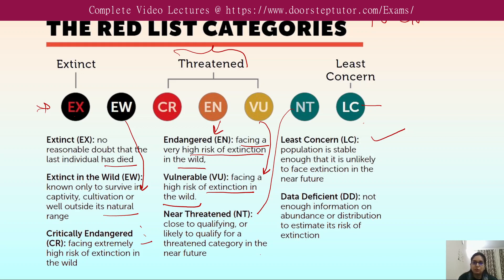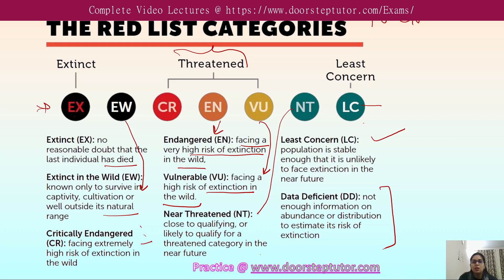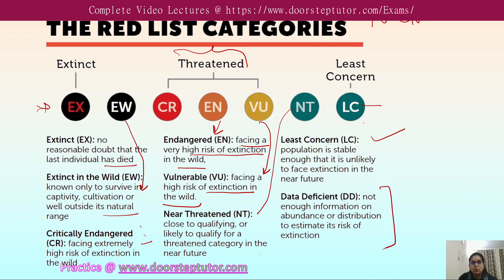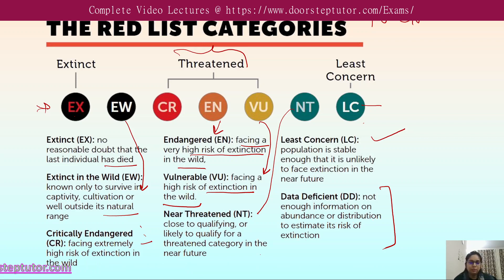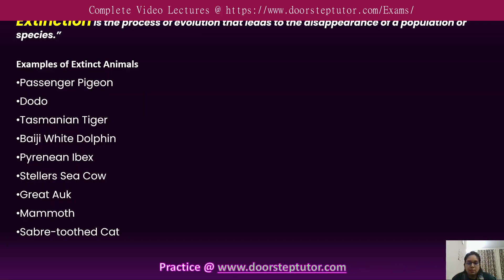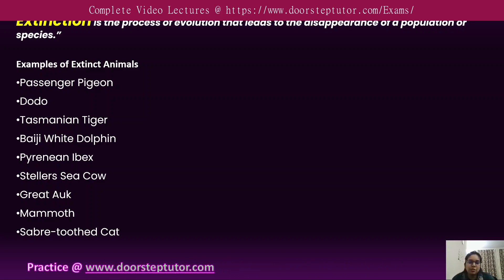'Data Deficient' means proper data is not available on the abundance or distribution of that particular species to estimate its risk of extinction. These constitute the Red List categories recognized by the IUCN.